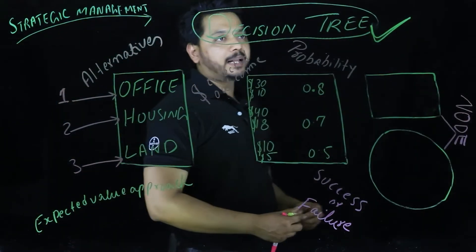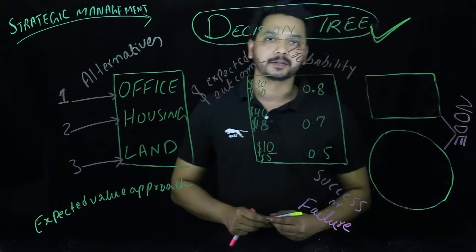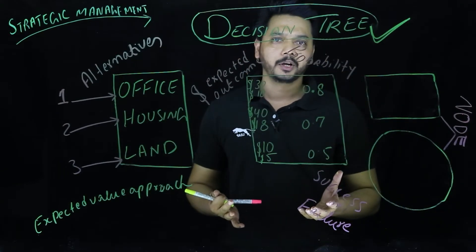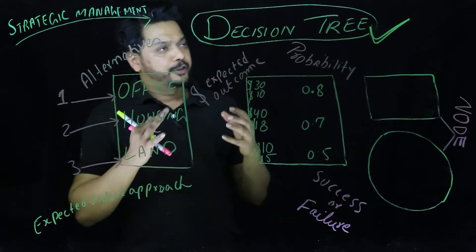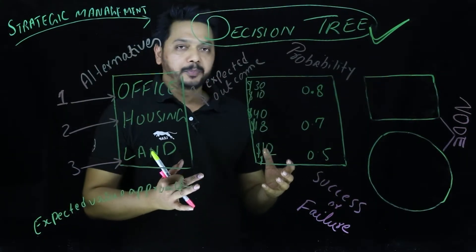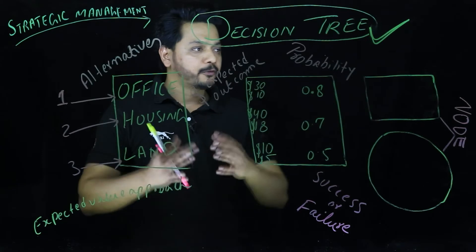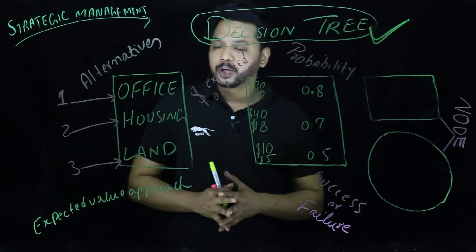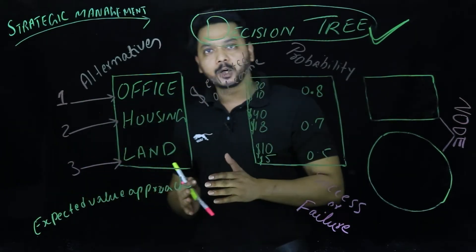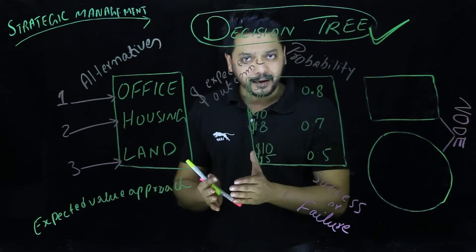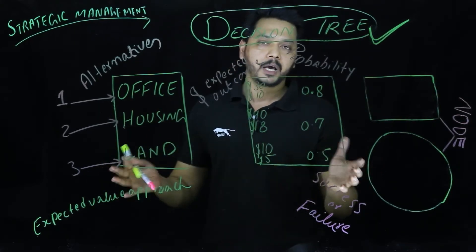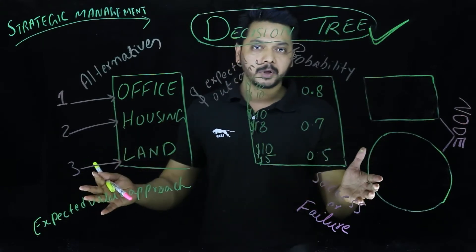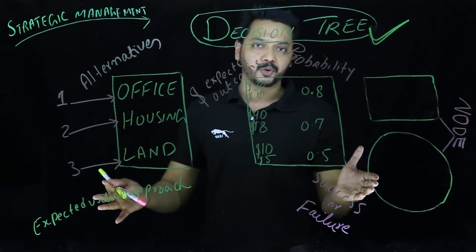Let's begin with decision tree analysis. The decision tree analysis is basically a scientific model which is used by different organizations during their decision making process. This graphical representation is basically structured in the form of a tree, in which the problems associated with each decision is characterized in the form of a flowchart with each outcome with the level of probability attached to it.